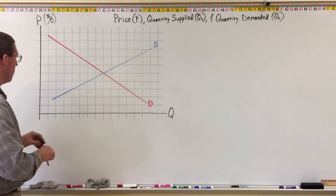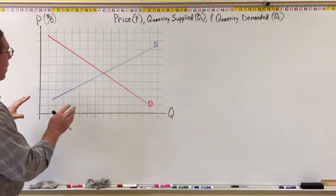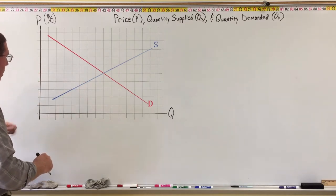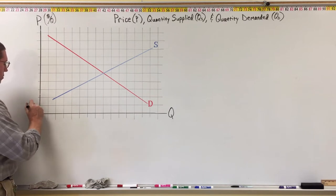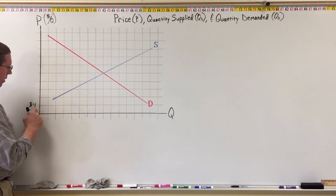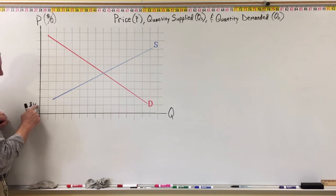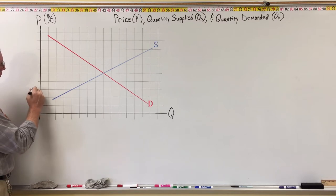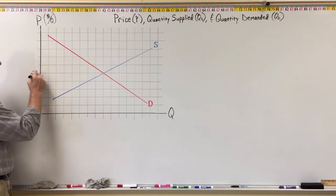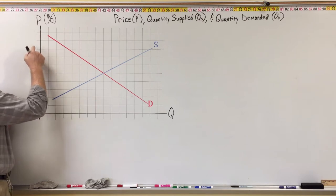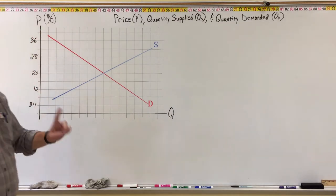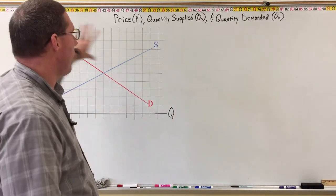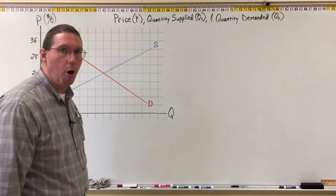I want to set the scale on this market graph. We're going to say that each grid line on the price axis is $4. So going up, we have 4, 8, 12, 16, 20, 24, 28, 32, and 36. These are all of the possible prices of whatever product is being bought and sold.